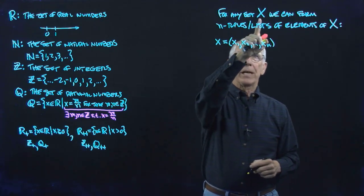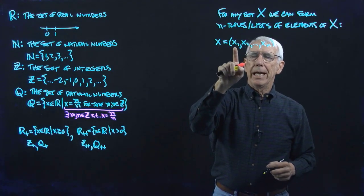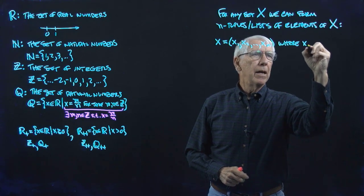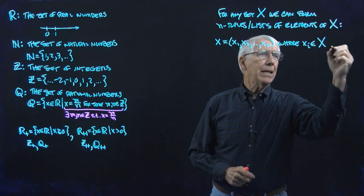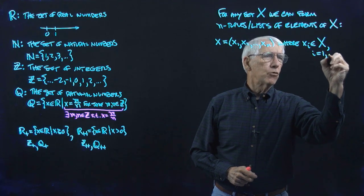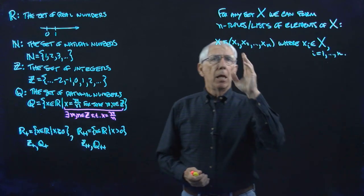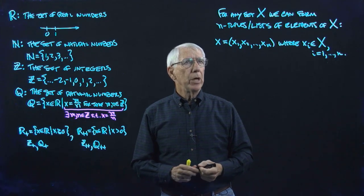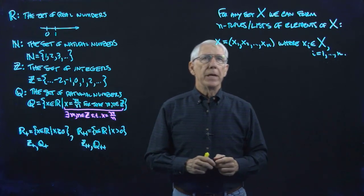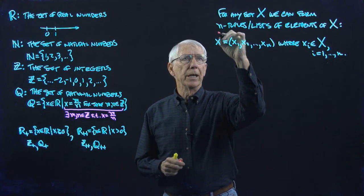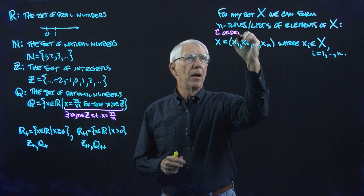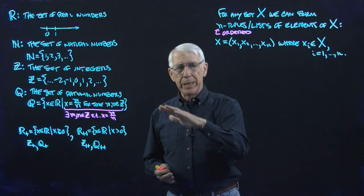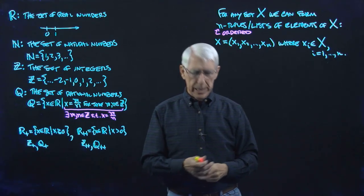A typical n-tuple, I would use just a letter X as the name of the whole n-tuple or the whole list, and it would consist of a list with parentheses around it, a list of elements of X. For example, if capital X is the real numbers, then this would just be a list of n real numbers, where XI is in capital X, I equals 1 to n. This would be the name of the n-tuple of the list, and I should point out that we often refer to these as ordered n-tuples or ordered lists. The reason for that is because the order really matters here.